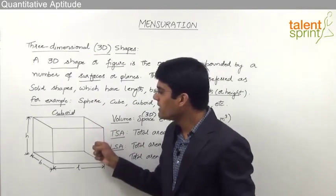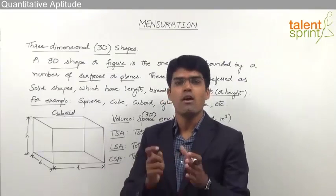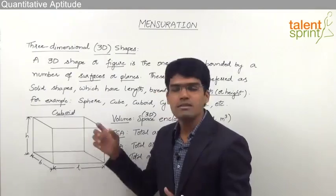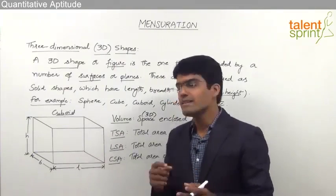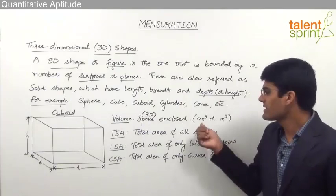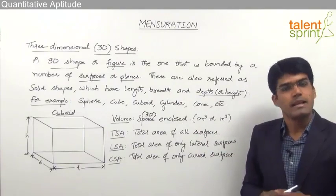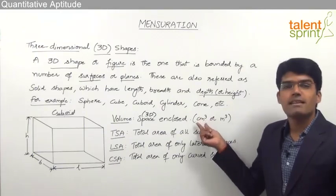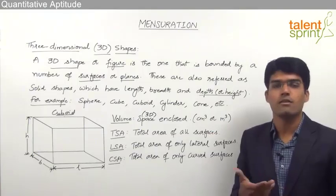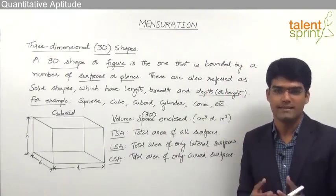This cuboid can be constructed in terms of a number of cubes of side 1 meter each, and the count of those cubes will give us the volume of the cuboid. That is the reason we use units such as meter cube, cubic meter, centimeter cube, or cubic centimeter. It can also be in millimeter cube, cubic feet, etc.